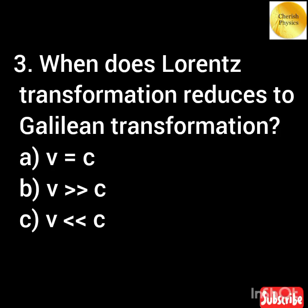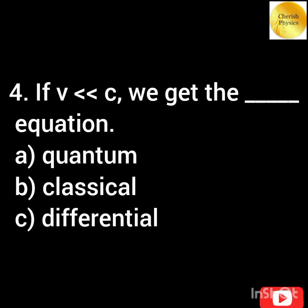When does Lorentz transformation reduce to Galilean transformation? If v is very much less than c, we get what type of equation?